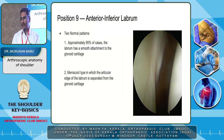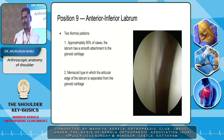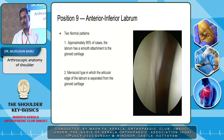Coming to the ninth position — the anteroinferior labrum. From the superior glenohumeral ligament, middle glenohumeral ligament, subscapularis tendon, and anterior superior labrum, you come to the ninth position: the anteroinferior labrum. There are two normal patterns. Approximately 95 percent of cases the labrum has a smooth attachment to the glenoid cartilage, and sometimes it may be meniscoid where the edge of the labrum is separated from the glenoid cartilage.